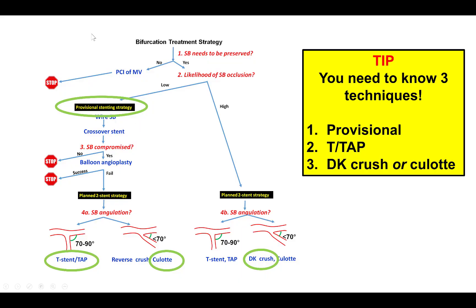How to treat it? This is the overall bifurcation treatment strategy for selecting the stenting approach. In this case, the side branch needs to be preserved and the likelihood of occluding it is high. Therefore, this is an example for doing a planned two-stent strategy. The angle was less than 70 degrees, so the most common techniques are DK crush and culotte, and DK crush is the technique most commonly used in our lab for these bifurcations.